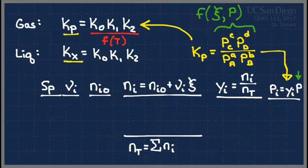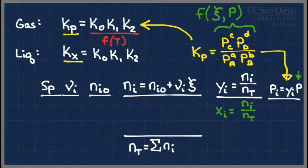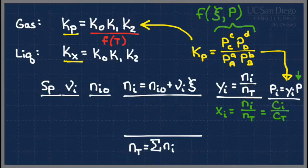This doesn't change at all if you want to do liquids. The only thing that changes is instead of y_i, we use x_i = N_i / N_total. There's also another version: concentration C_i over total concentration — that's not on this homework but we'll come back to it next week. For liquids, you don't need a partial pressure column; just stop with the x_i's and plug them back into the expression. This is how we link things together.